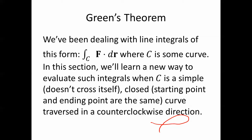C is a simple closed curve. Closed means the starting point and ending point are the same. So that would be a closed curve. This is not a closed curve. When c is a simple closed curve traversed in a counterclockwise direction, this would be an example of a simple closed curve traversed in a counterclockwise direction.